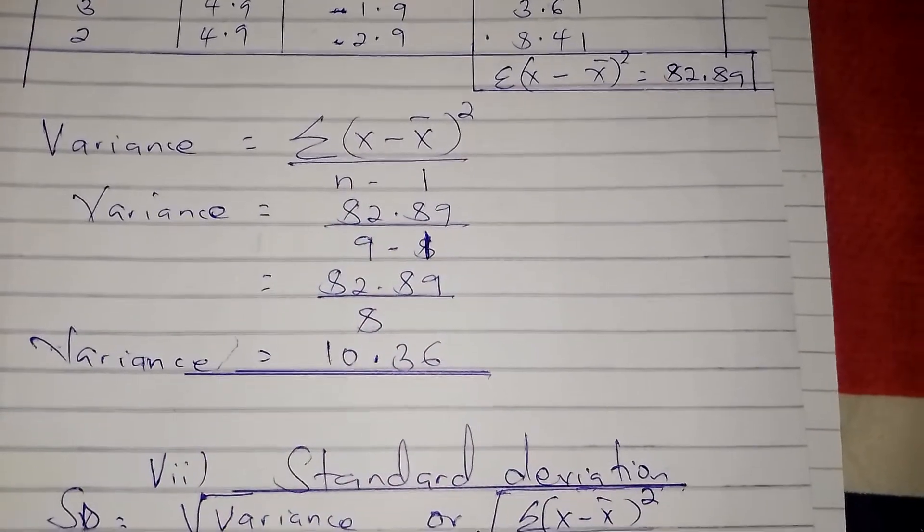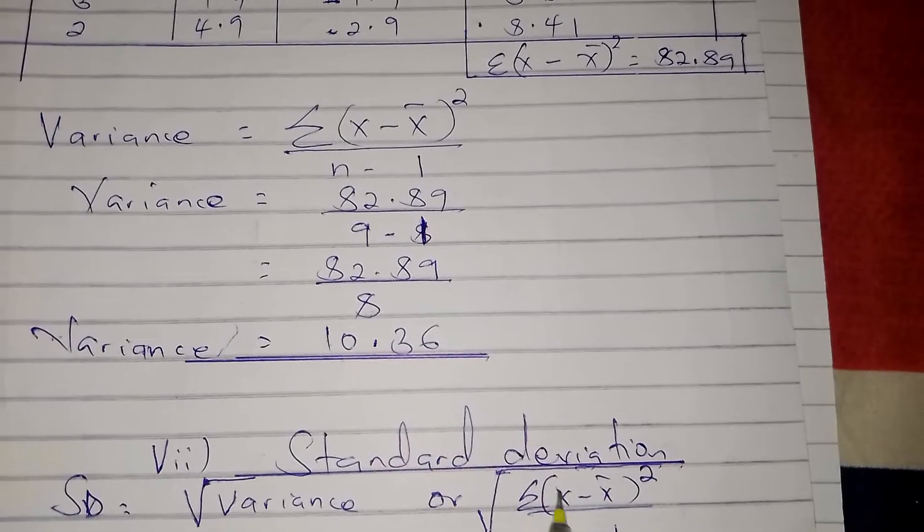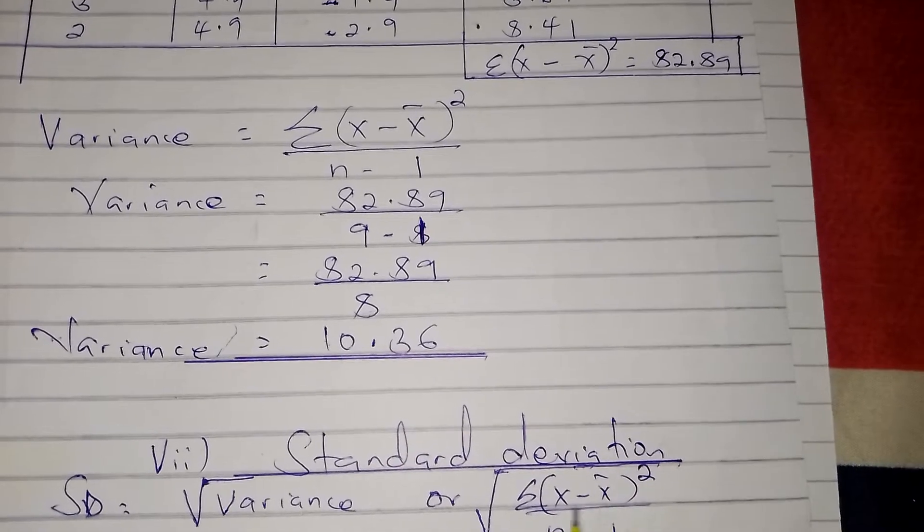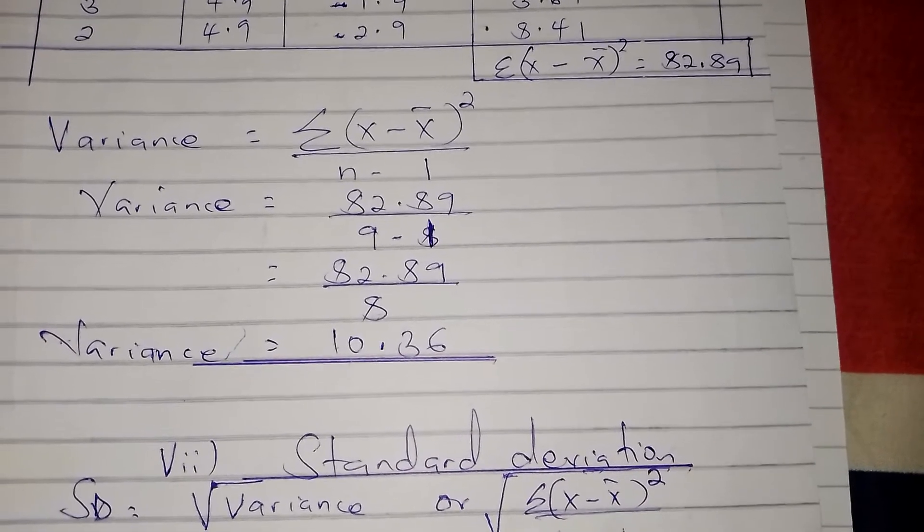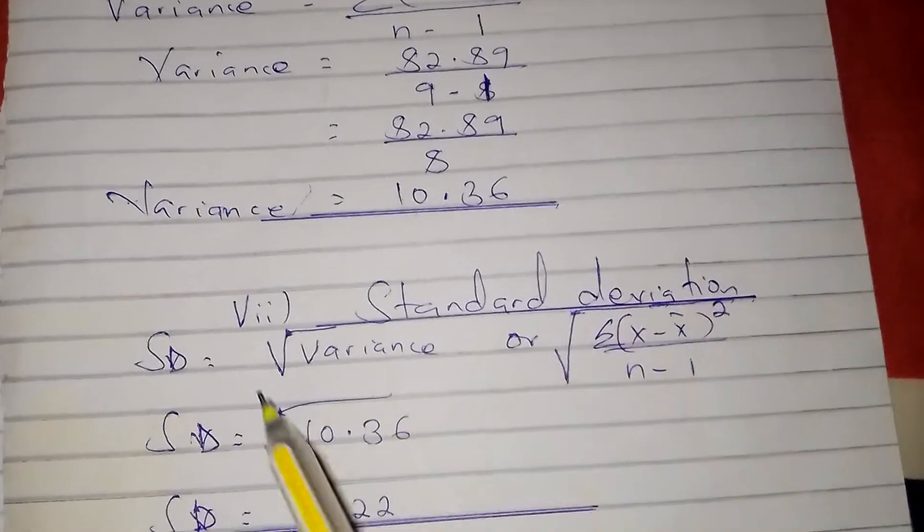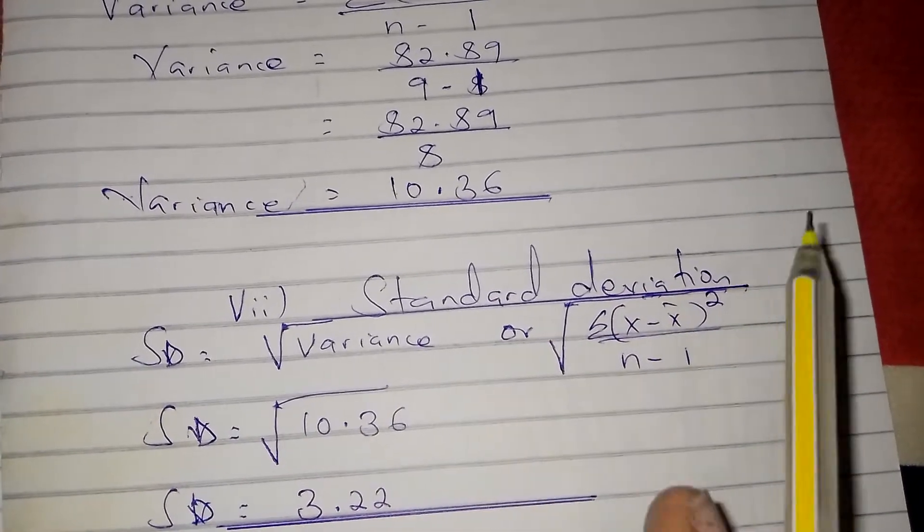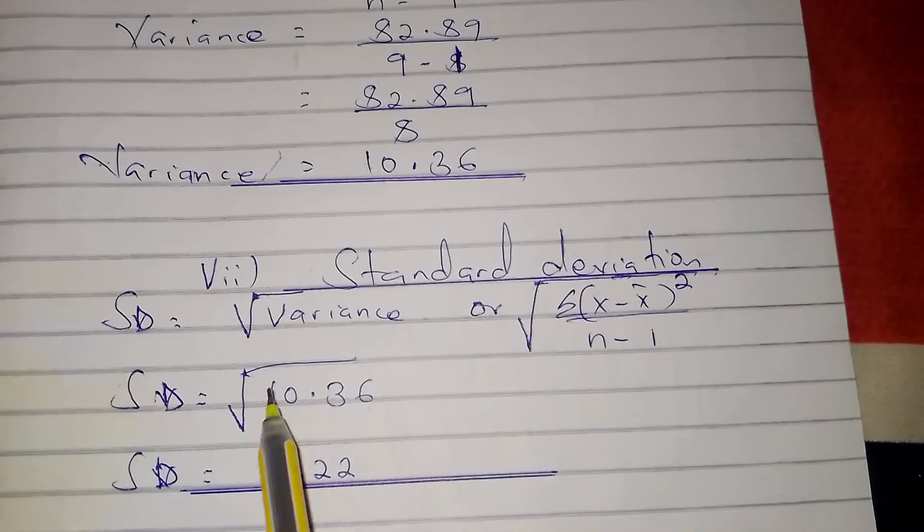It's the same thing: √[Σ(x - x̄)² / (n - 1)]. So standard deviation is the square root of variance.